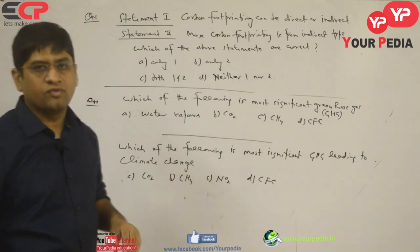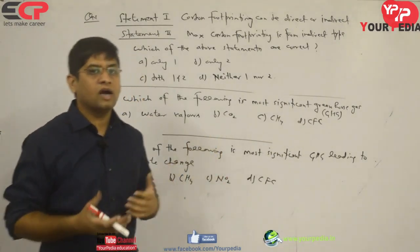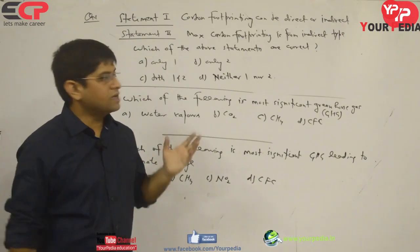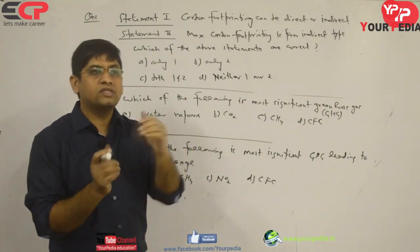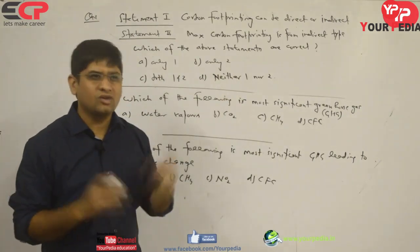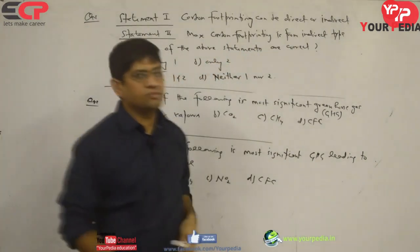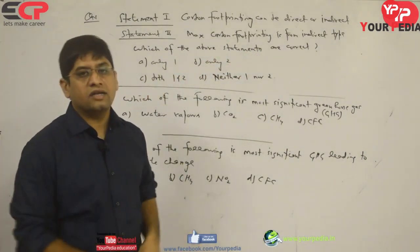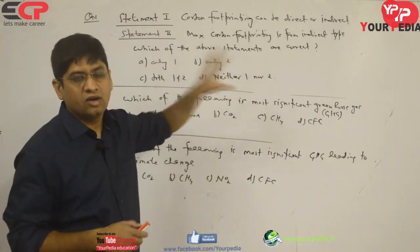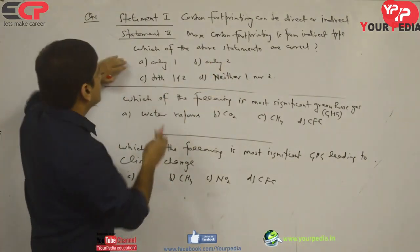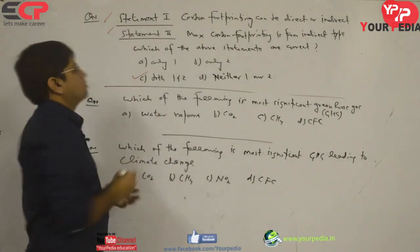Carbon footprinting can be direct — where I am directly consuming carbon as a consumer — or indirect — where I am not directly burning carbon but using something which is carbon-based. Maximum carbon footprinting is from the indirect type. That is a fact. So both statements are correct. These statements are independent — not required to be related.